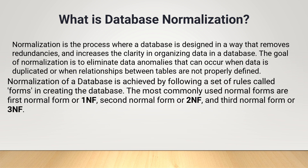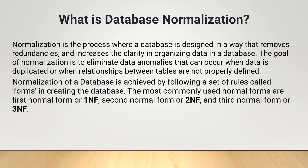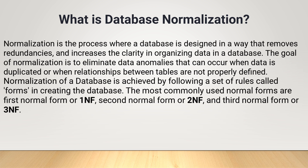Normalization of a database is achieved by following a set of rules called forms. The most commonly used normal forms are First Normal Form or 1NF, Second Normal Form or 2NF, and Third Normal Form or 3NF.